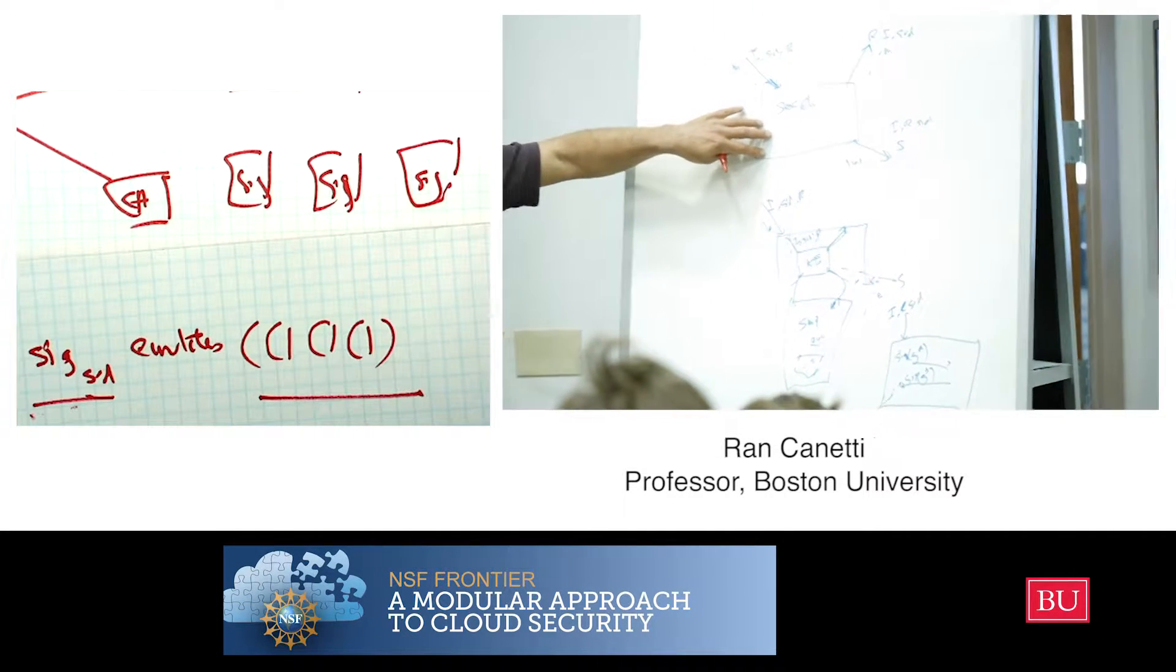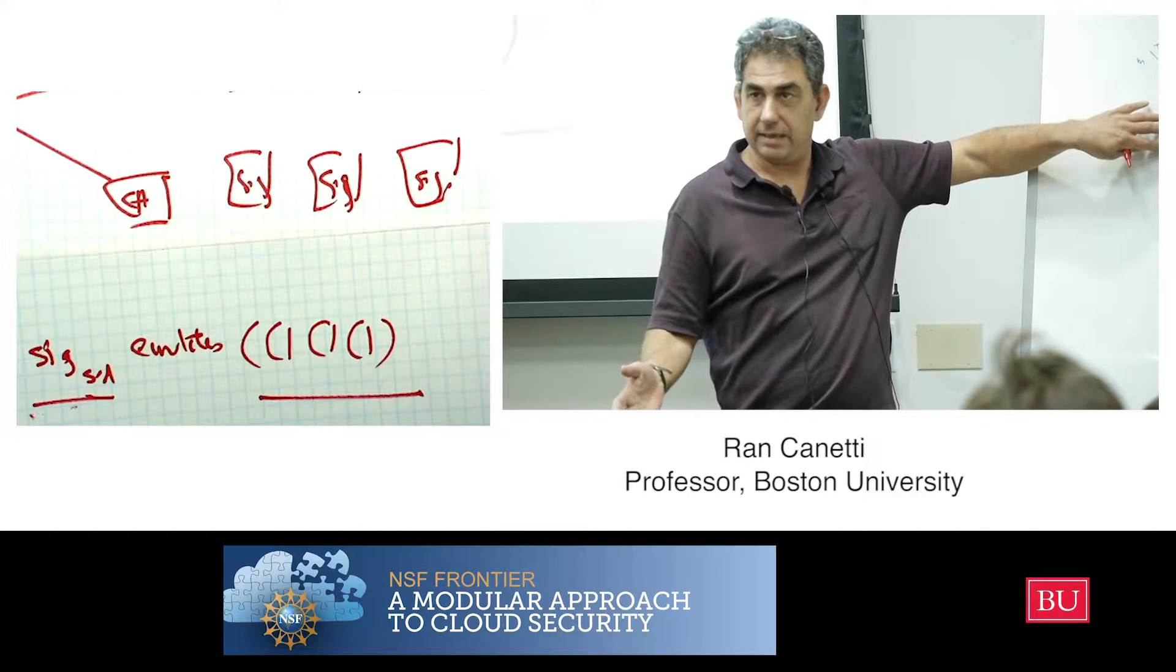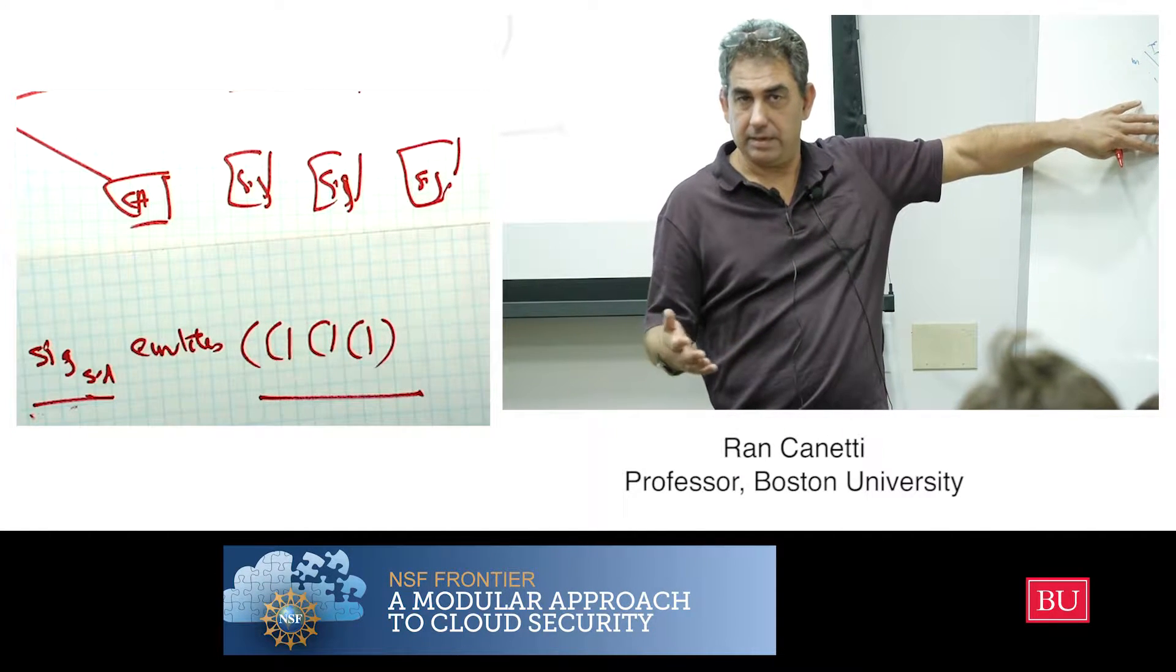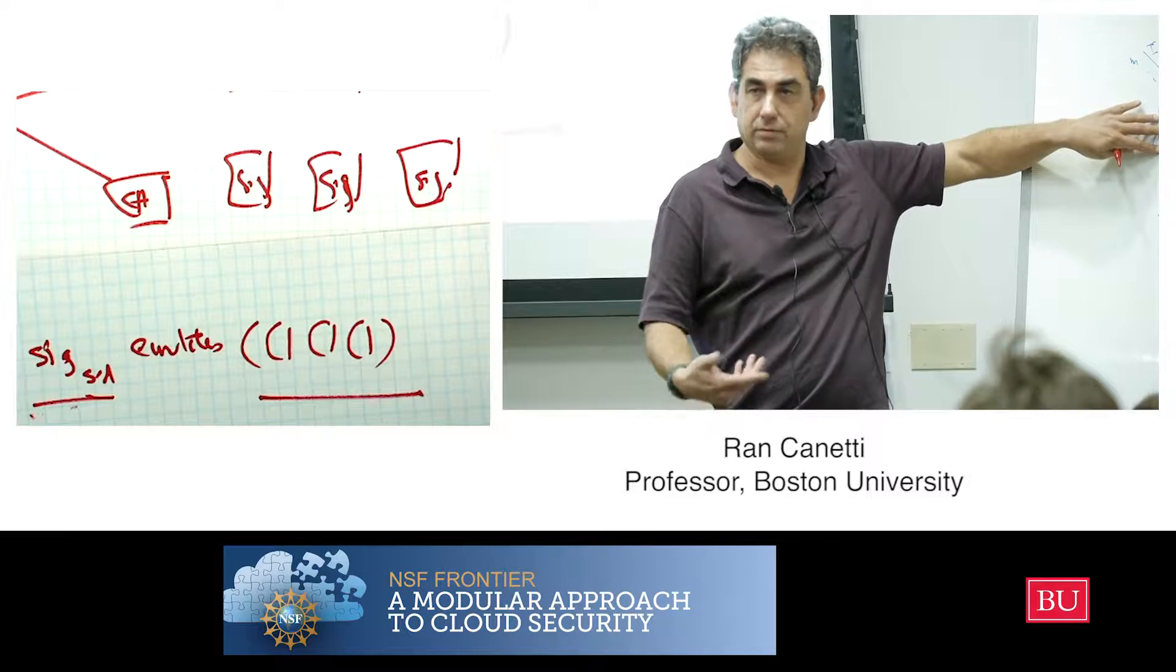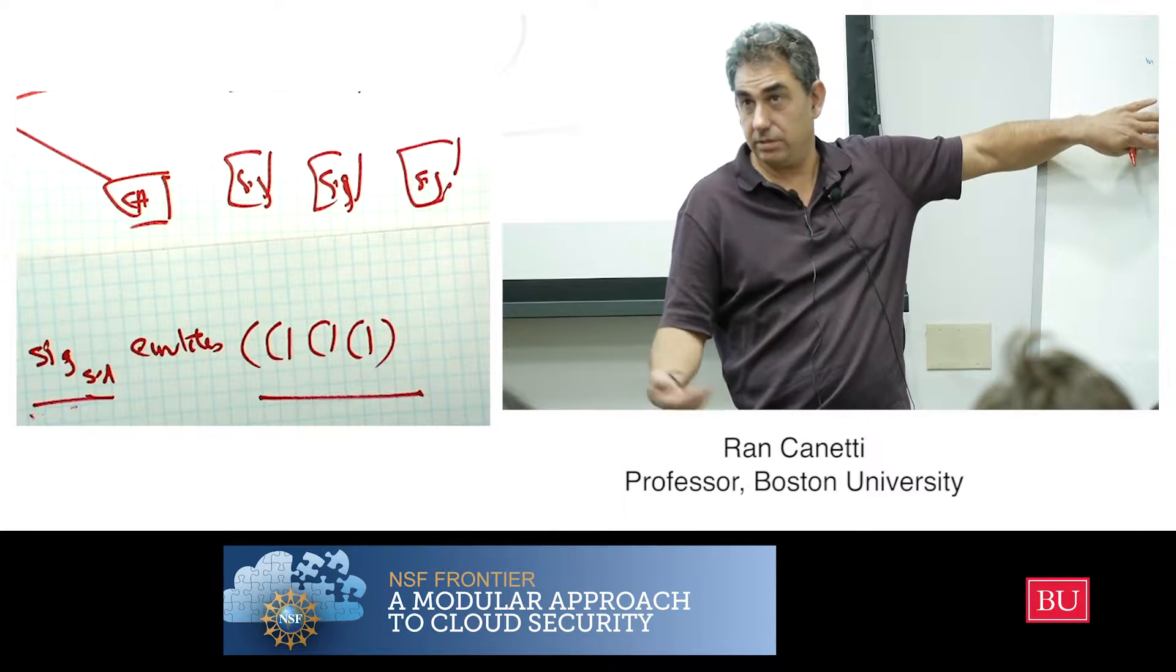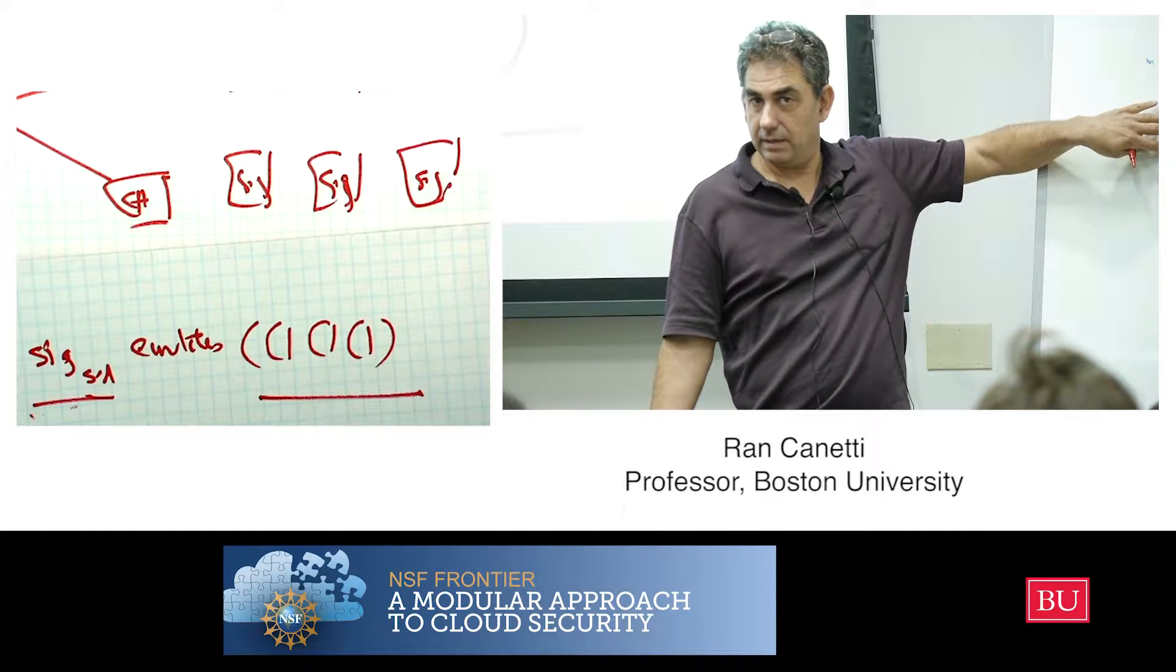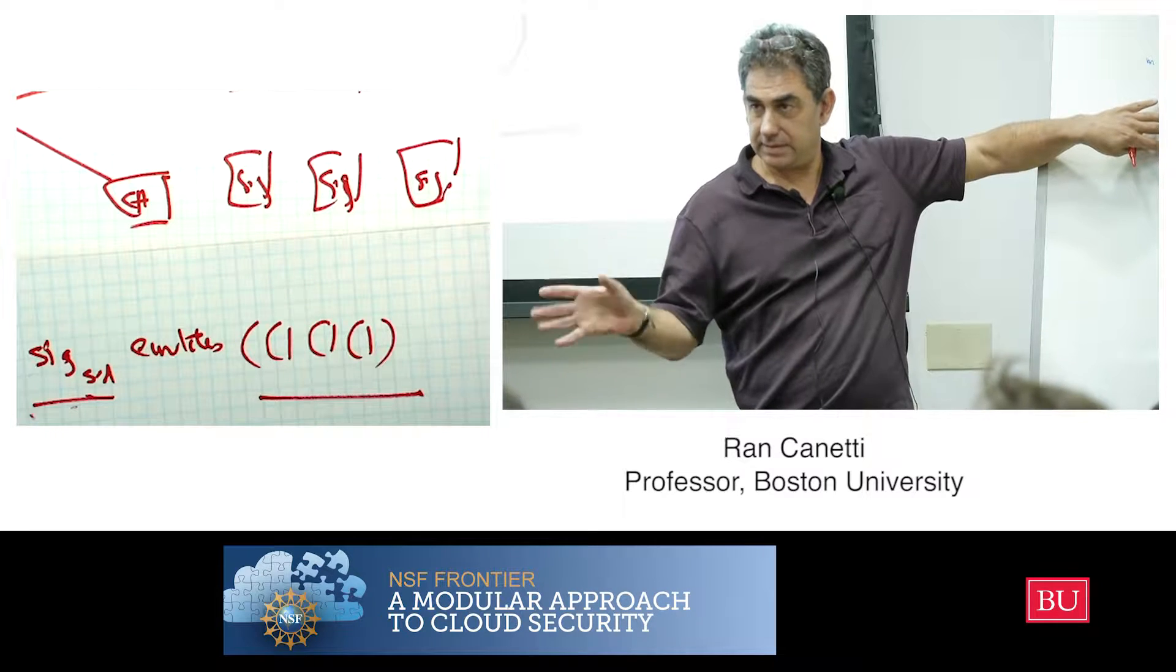This is great, but it doesn't really correspond to reality. Because in reality, the CA is out there everywhere, and people use it not just for the authentication, for the key exchange. They actually use the same signatures everywhere else, right? So we didn't really model things exactly right.